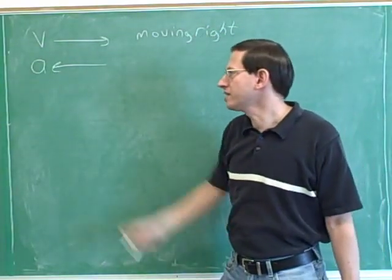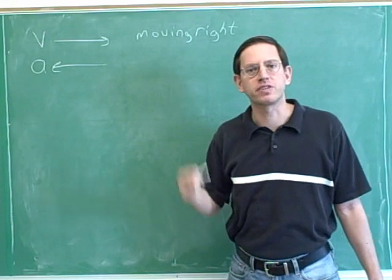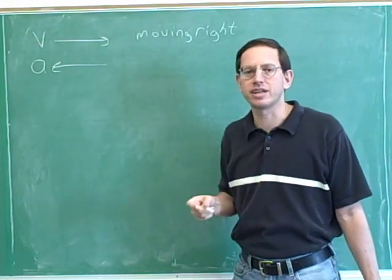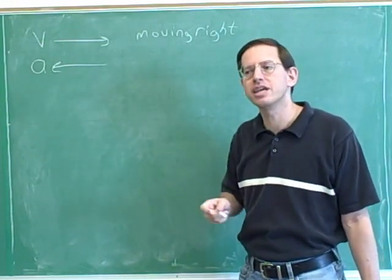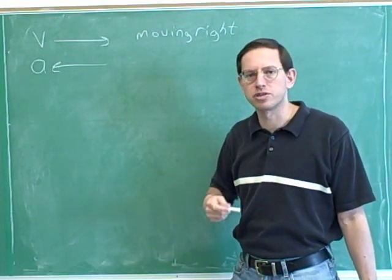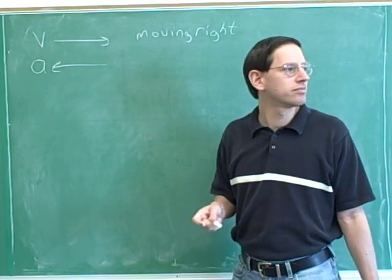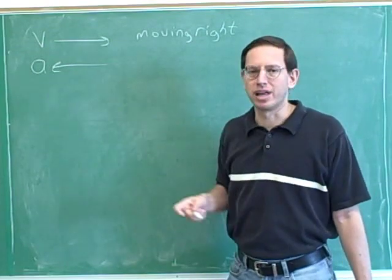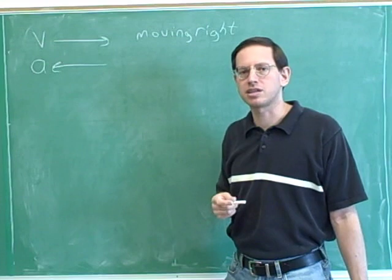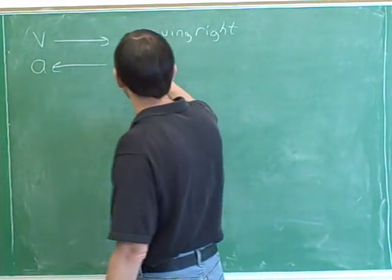You can see already that the acceleration does not tell you which way you're going. That's something we've emphasized in the previous series of videos. The acceleration does not tell you which way you're going. Instead, the acceleration tells you whether you're speeding up or slowing down. In this case, the acceleration is anti-parallel to the velocity, and when the acceleration is anti-parallel to the velocity, you're slowing down.